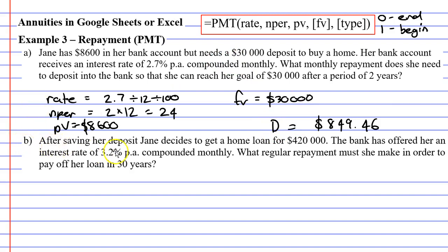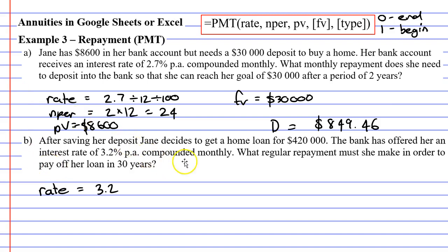Moving on to question B. After saving her deposit, Jane decides to get a home loan for $420,000. The bank has offered her an interest rate of 3.2% per annum compounded monthly. What regular repayment must she make in order to pay off her loan in 30 years? We're going to use the repayment formula, and we need to talk about the rate first. Our rate is 3.2%, and remember it's being compounded monthly, so we need to divide this by 12 and also divide it by 100 to convert it to a decimal.